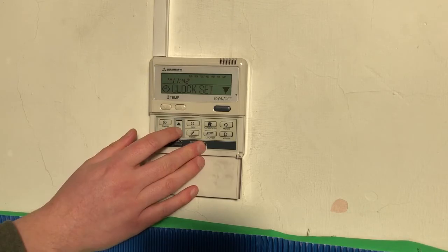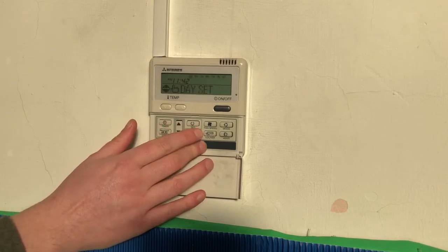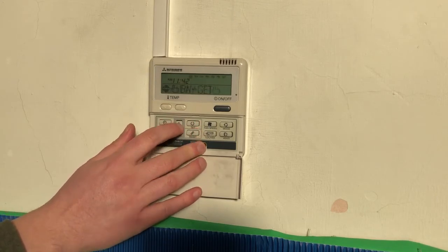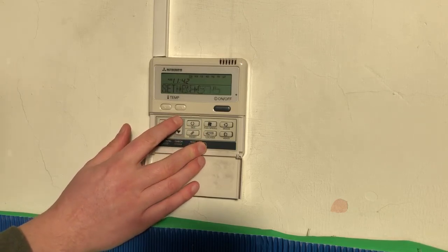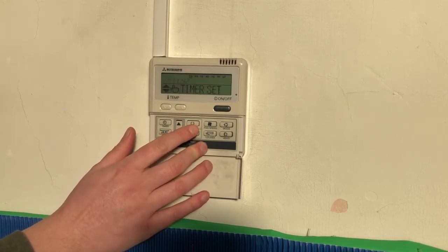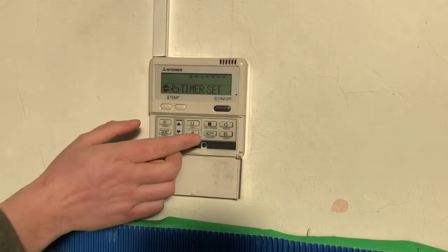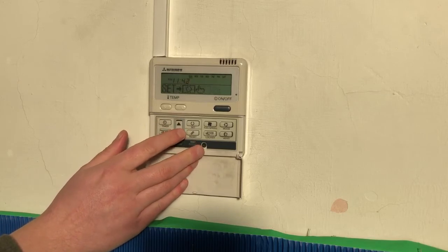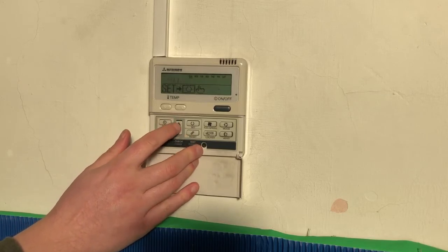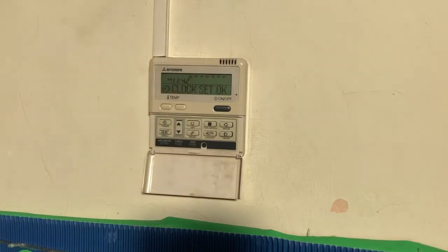So that's the day set. Okay. So we're on to clock set. We can do day set. And then it will say timer set. So once we've set the day, then we go through to the timer set. So it is 11:42, but you basically change it just by going up and down on your arrow keys. When you've got the right time, it says clock set. Okay. So that's how you set the clock.